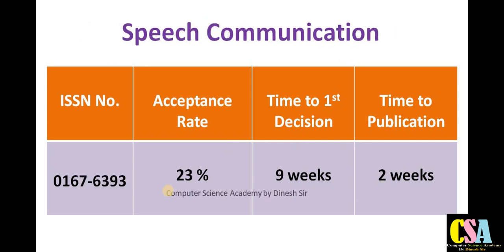The next category is Speech Communication. I suggest all of you explore this journal. It is basically dedicated to electrical electronics and communications and also computer science researchers. The acceptance rate is 23 percent, which is very good, and it is also a rapid publication journal. Your research paper will get published within approximately three months — total time required is around 12 weeks.